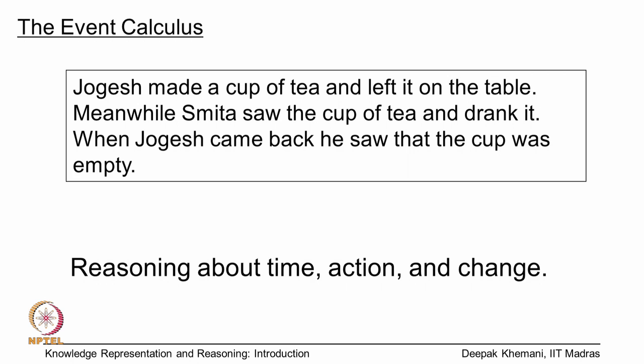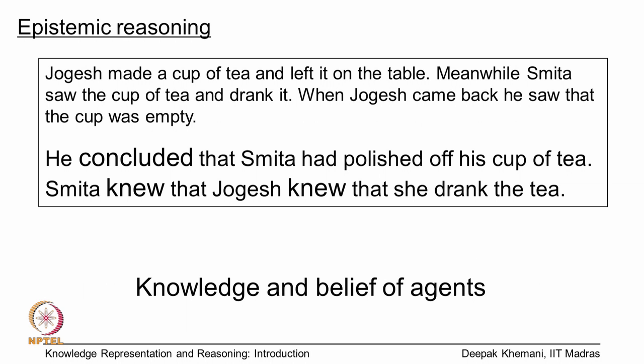We then move on to event calculus, which talks about time, action, and change. For example, Jogesh made a cup of tea and left it on the table, Smita saw it and drank it up, and when Jogesh came back he saw that the cup was empty. Here we are talking about things which are changing — the cup was full at one time and empty at another time, and people did actions. Event calculus allows us to reason with that.